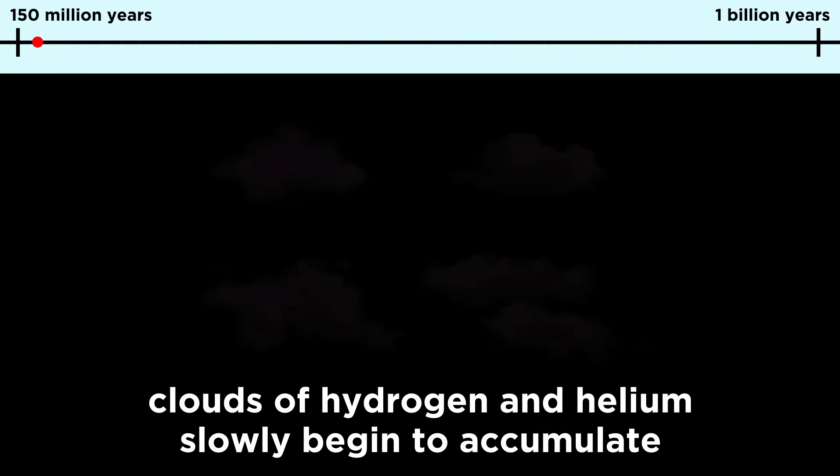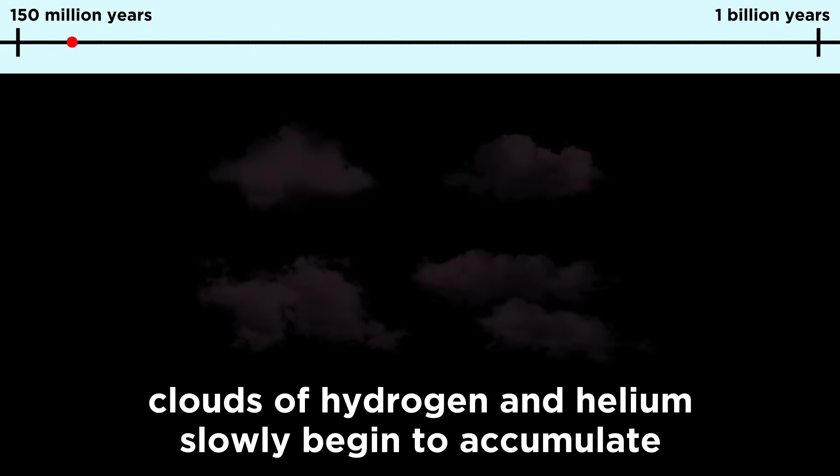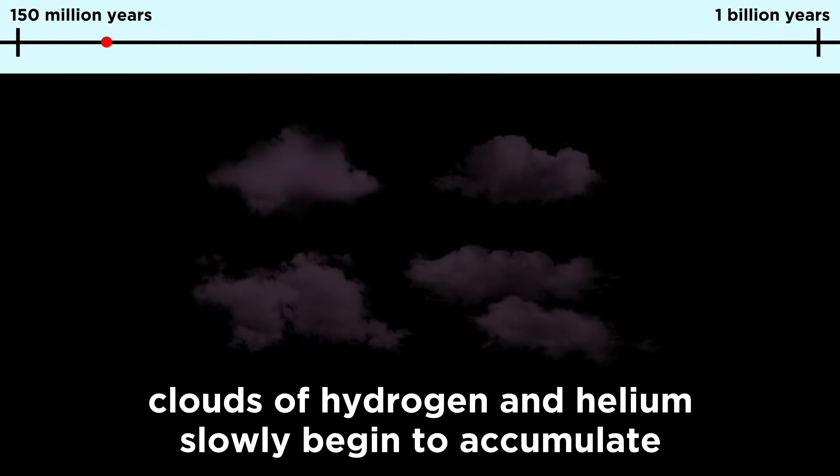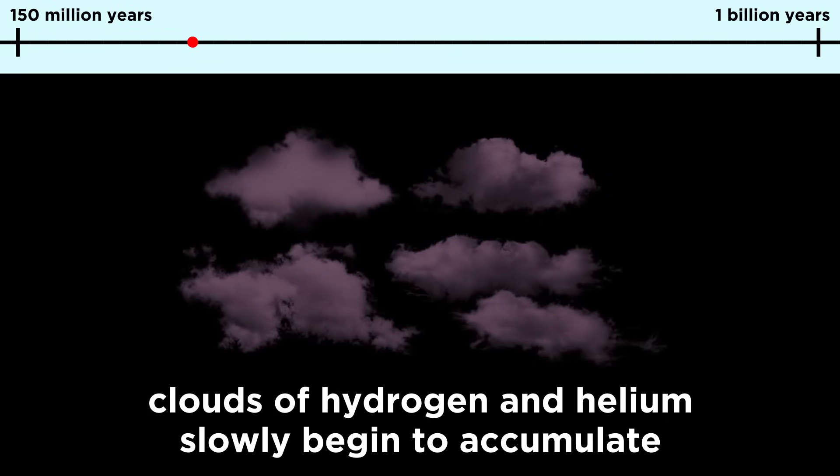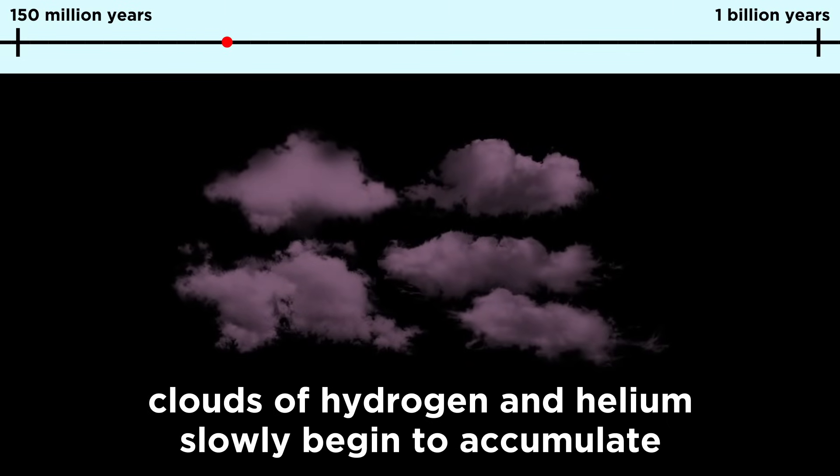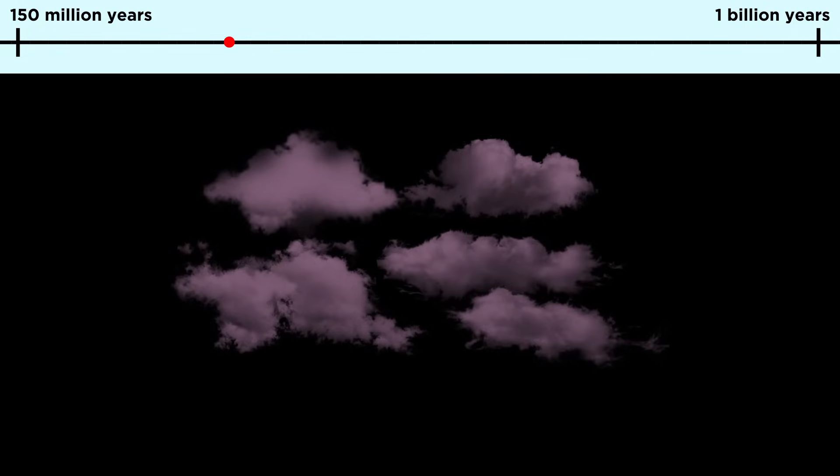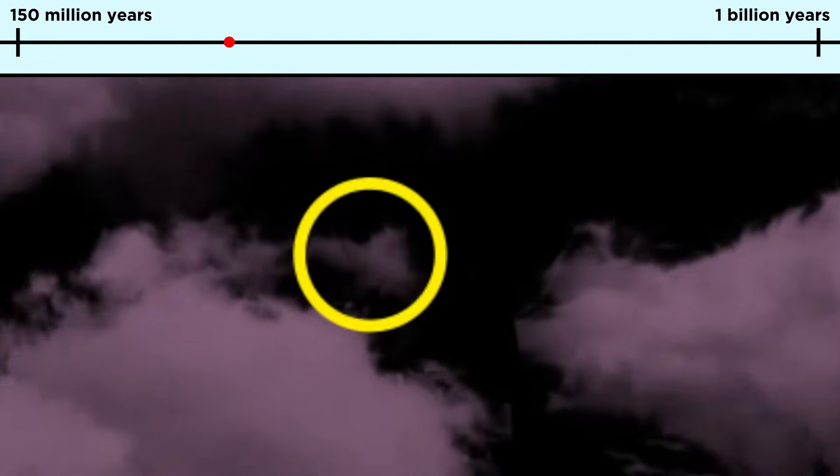So from around 150 million years to about a billion years after the Big Bang, all of this hydrogen and helium slowly began to collect into regions of higher density. Given the random distribution of matter, some regions became very dense quite early in this era, while others took a lot longer, but let's zoom in on one of these dense patches of gas to get a closer look.